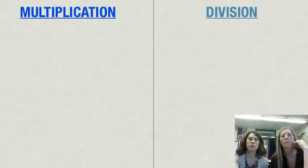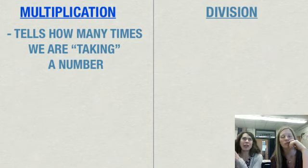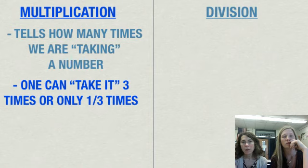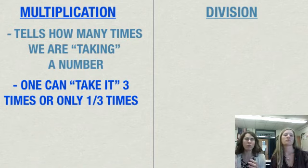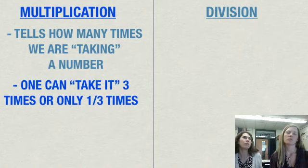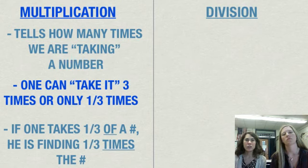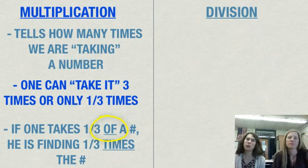Let's just focus on multiplication first. Multiplication, just remember, it tells how many times we're taking one number and doing something with it. Think about how one can take a number maybe three times or only one-third times. Sometimes we get overwhelmed with these fractions, but you could do the same with a whole number too. And this key idea: if you see the word 'of', think multiply.